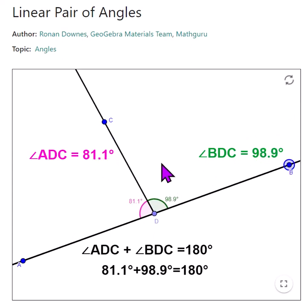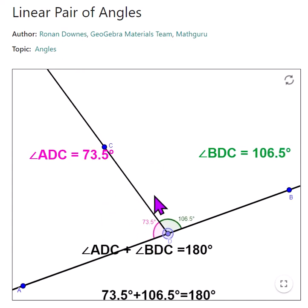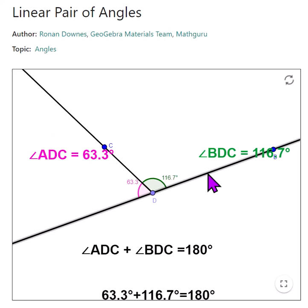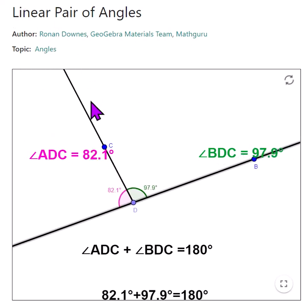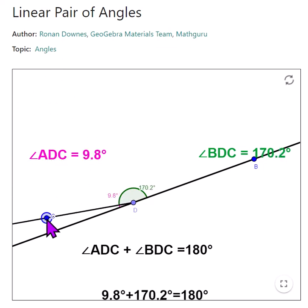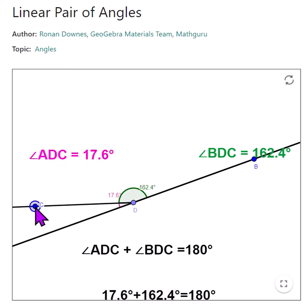...we call them a linear pair. Can we see what they always add up to? If we make the pink one really small, very acute, the green one is obtuse and moving towards 180 degrees.